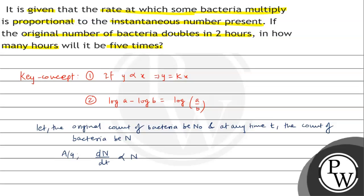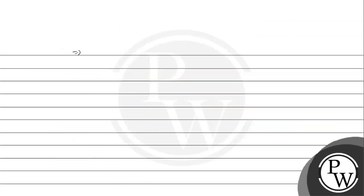The instantaneous number is n, so it is proportional to dn/dt. If we have proportionality, then we introduce a proportionality constant lambda, where lambda is a constant. Further simplifying, let's separate variables: dn upon n is equal to lambda dt. Integrating both sides gives the integration of dn upon n equals integration of lambda dt.